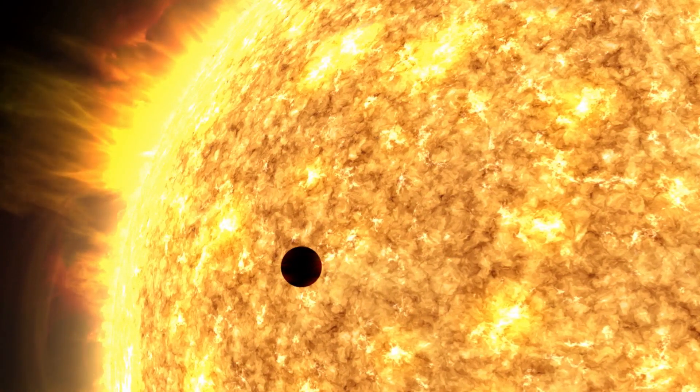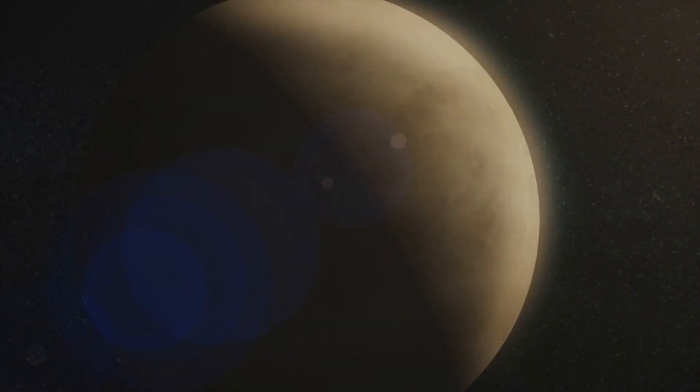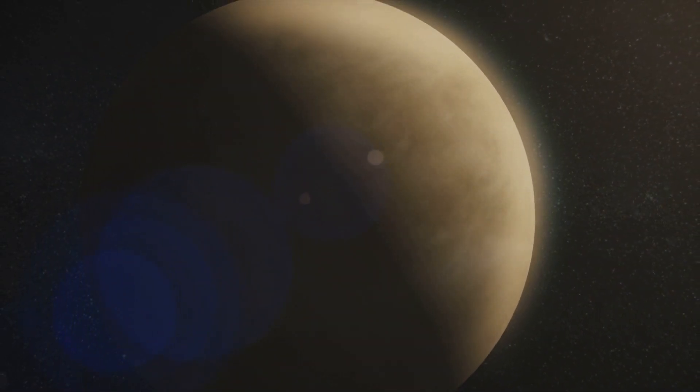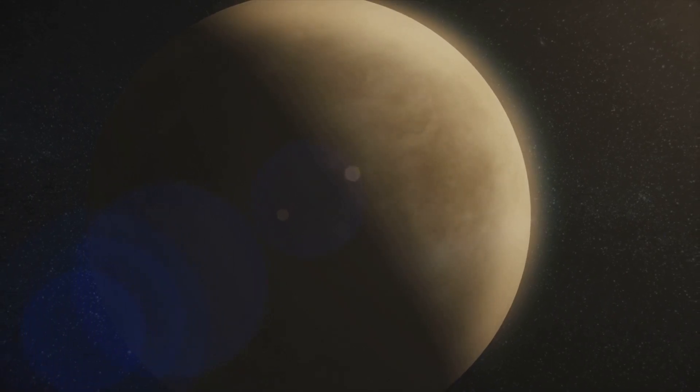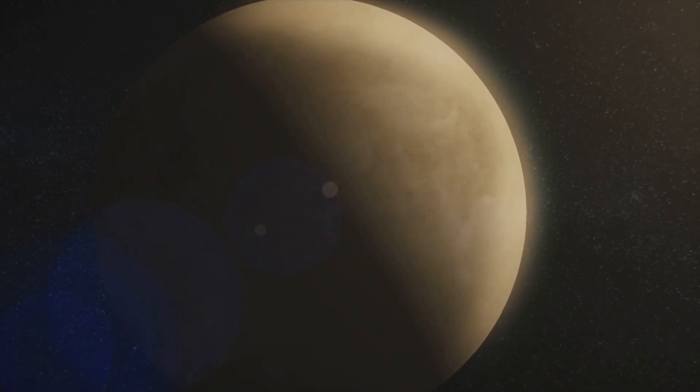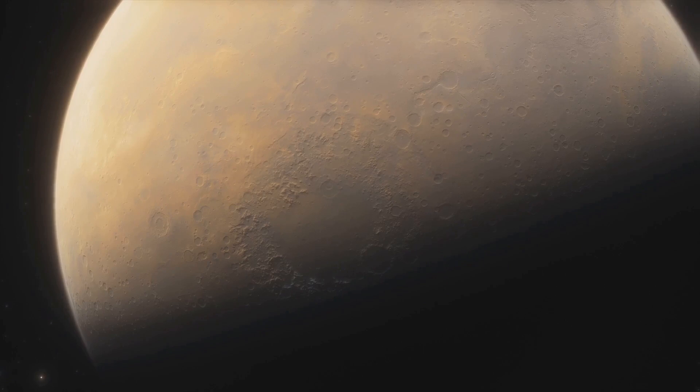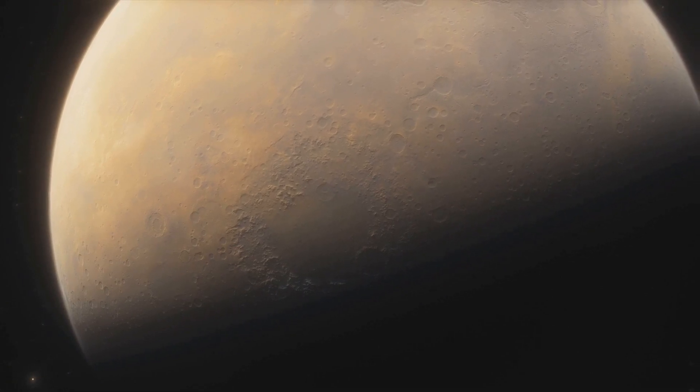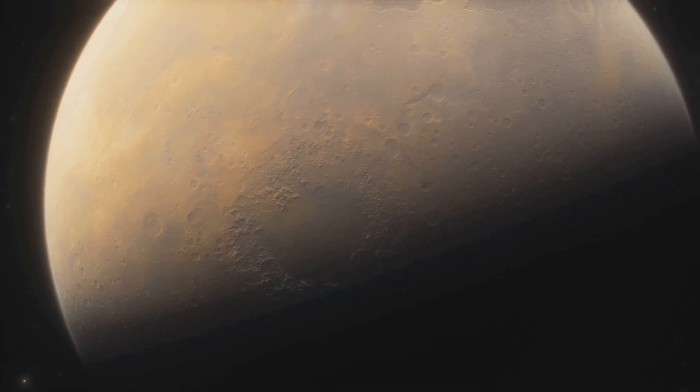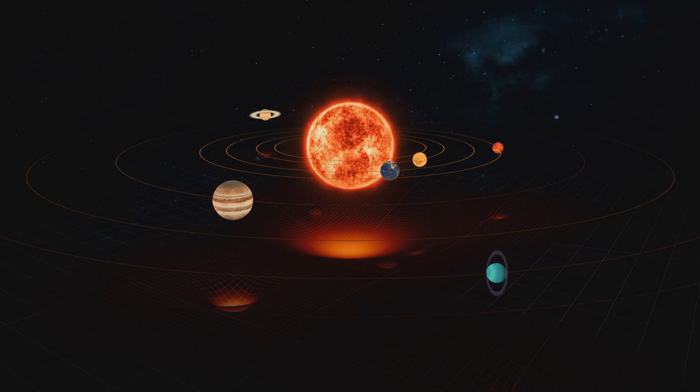Take Mercury, for instance, our solar system's innermost planet. During the day, temperatures on its surface can soar to a blistering 800 degrees Fahrenheit, hot enough to melt lead. But without an atmosphere to trap heat, those same temperatures can plummet to a frigid minus 290 degrees Fahrenheit at night. And that's just our cosmic backyard.